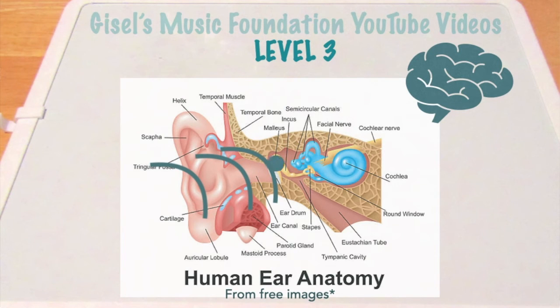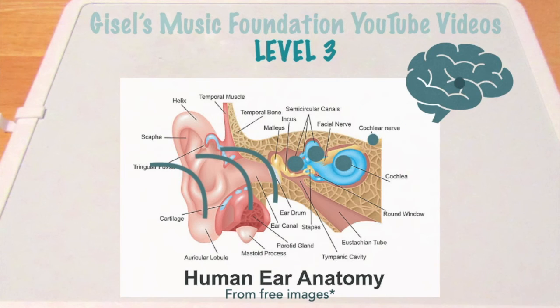Processing continues through the medial geniculate nuclei of the thalamus before arriving at the primary auditory cortex.